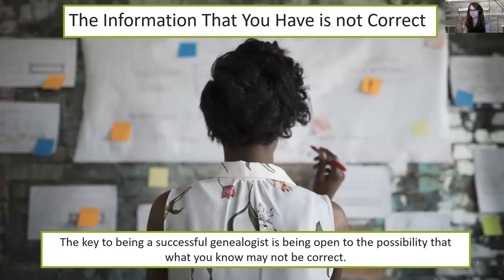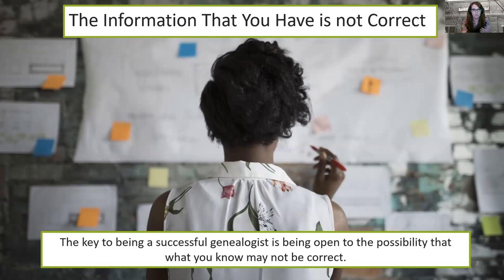You've done all your preliminary research and you're not getting results. You're fairly sure of the year of birth and arrival date, but maybe they're not right. At this point I want to research Canadian sources to gather more information. I'm looking to confirm a birth date and immigration details. The key to being a successful genealogist is being open to the possibility that what you know may not be correct — there are no hard and fast rules.